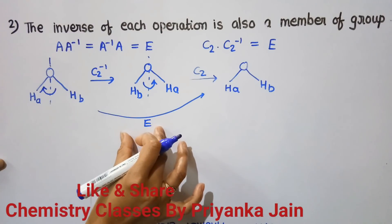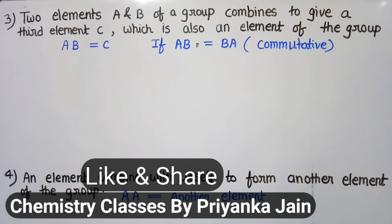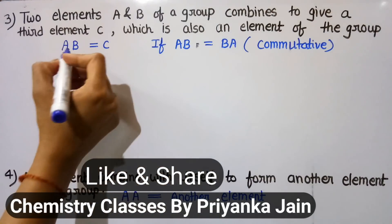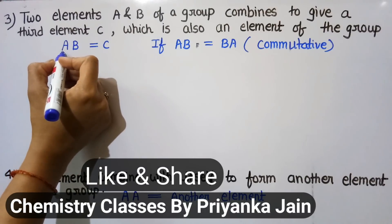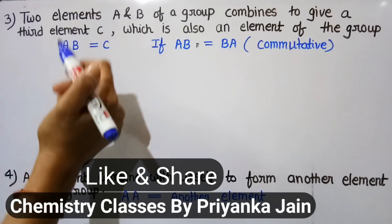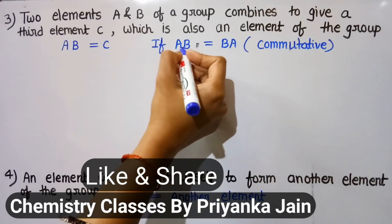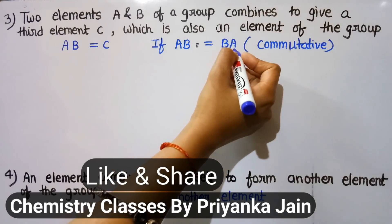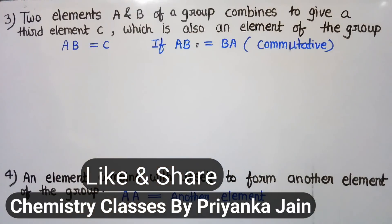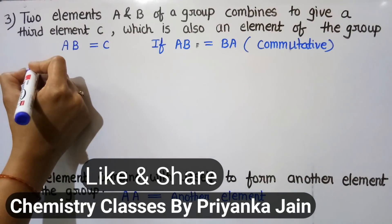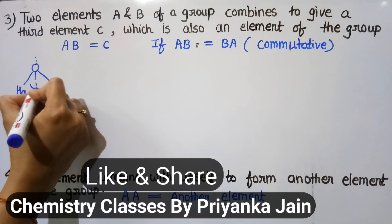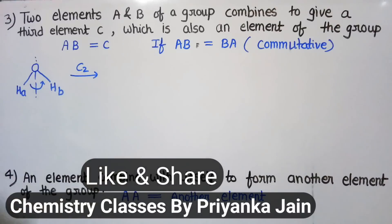The third postulate is: two elements A and B of a group combine to give a third element C, which is also an element of the group. If we apply B first and then A, the product C is also a group member. There is also a condition: if AB = BA — meaning both orders give the same product — then the two elements are said to be commutative.